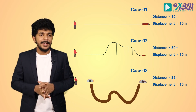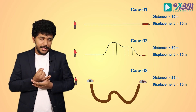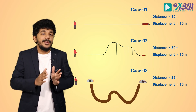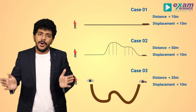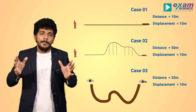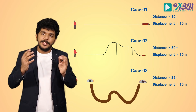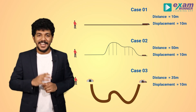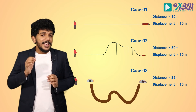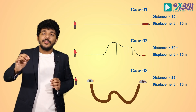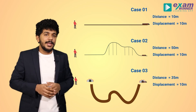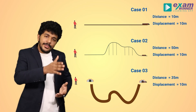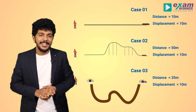To summarize: displacement is the shortest length between the initial and final point, and it is equal to the measure of the change in position. Distance, on the other hand, is the actual length of the path traveled by the object — that is, the total length of the path the object follows.